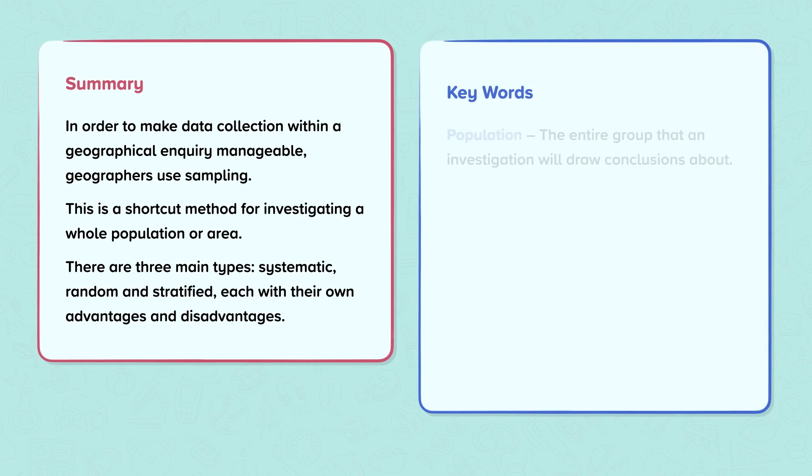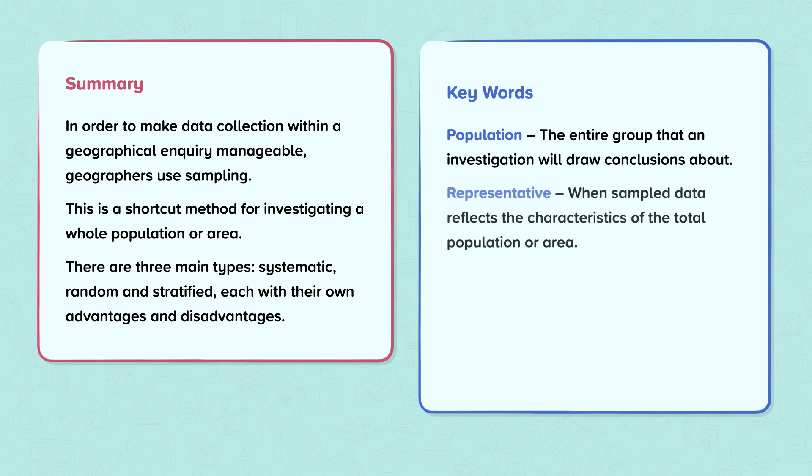Keywords. Population: The entire group that an investigation will draw conclusions about. Representative: When sampled data reflects the characteristics of the total population or area.